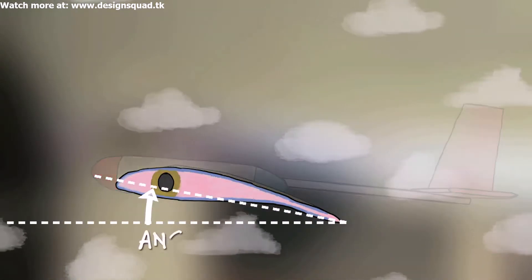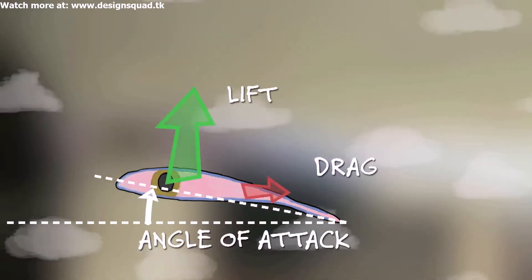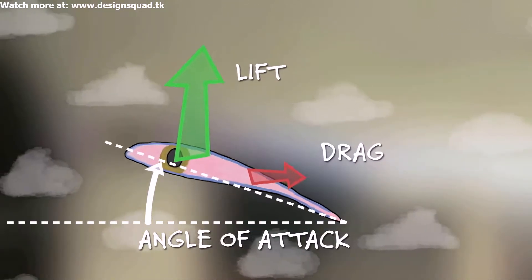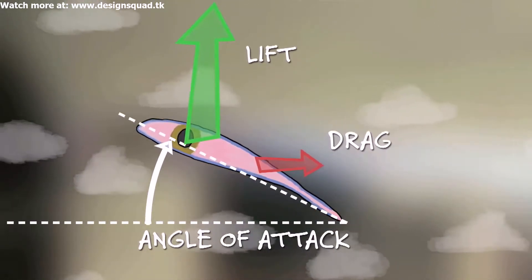The angle of the wing moving through the air is called the angle of attack. Increasing the angle of attack increases the amount of lift and the amount of drag from the wing.